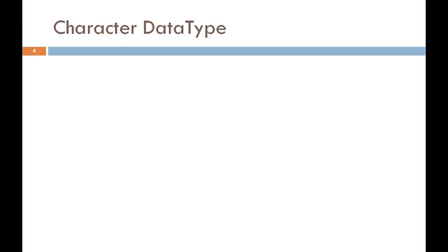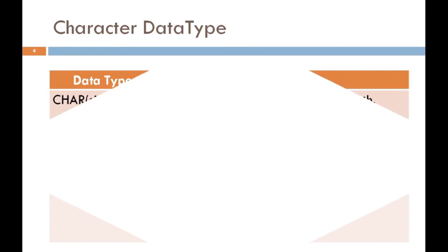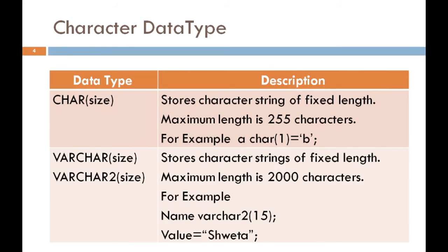Now we discuss the character data type. Mainly, the character data type has four categories. Based on the requirement of the user, we can use this character data type to store a single character as well as to store a collection of characters, which is nothing but a string. Or, if you have a large amount of data, then we also need a data type called LONG, which is used specifically to store a large amount of data as a string.